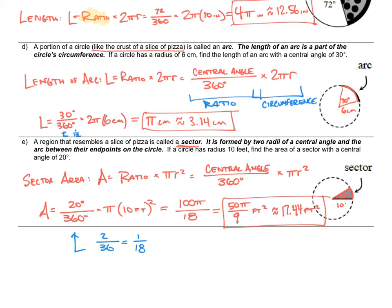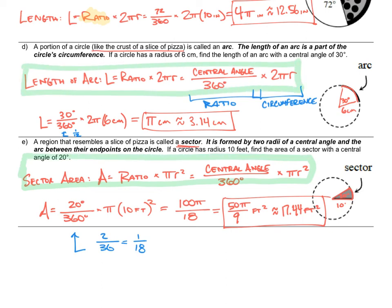We're done with the notes, but I want to highlight a couple of things. These are two formulas you need to know: central angle divided by 360 times the circumference formula for arc length, and central angle divided by 360 times the area formula for sector area. They're not hard to memorize because they really are just a ratio. That's it — kind of a long one. I hope you're able to stay with me. Good luck on the review preview.